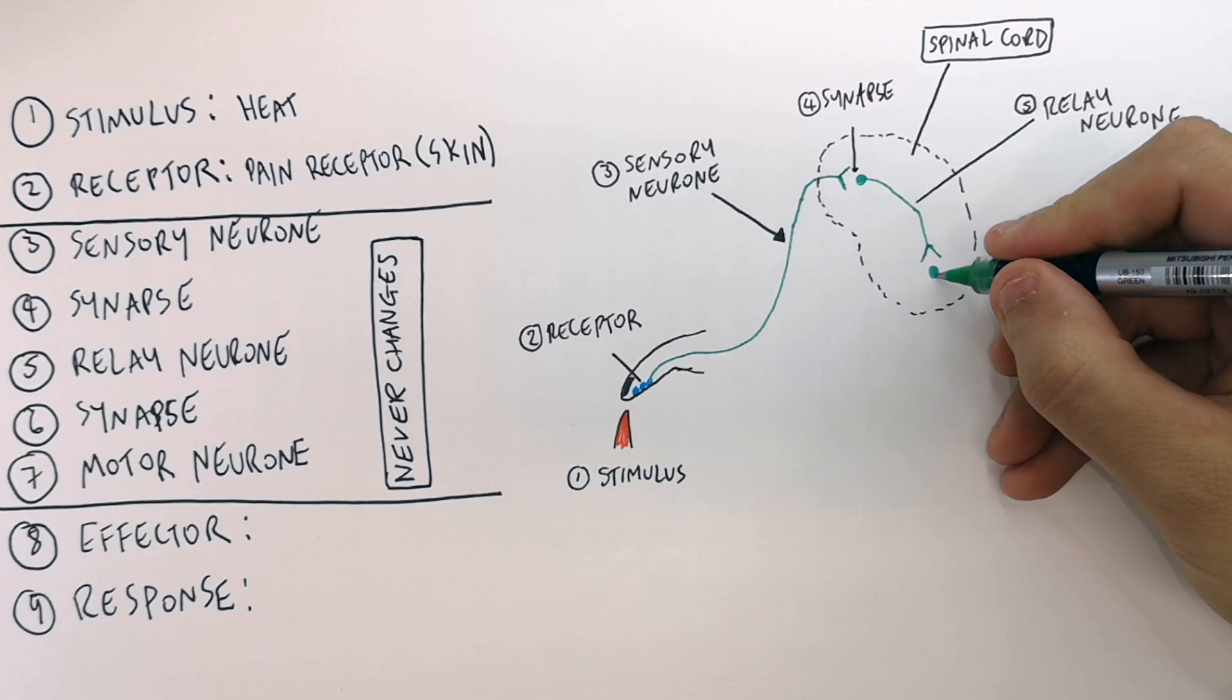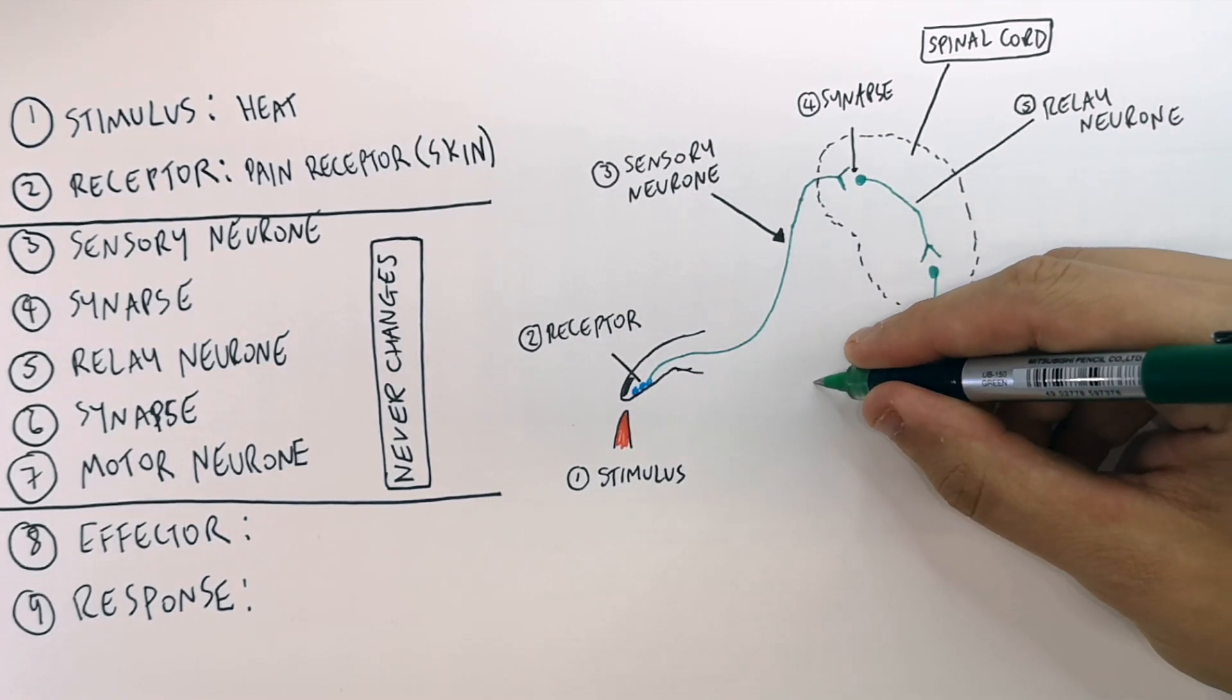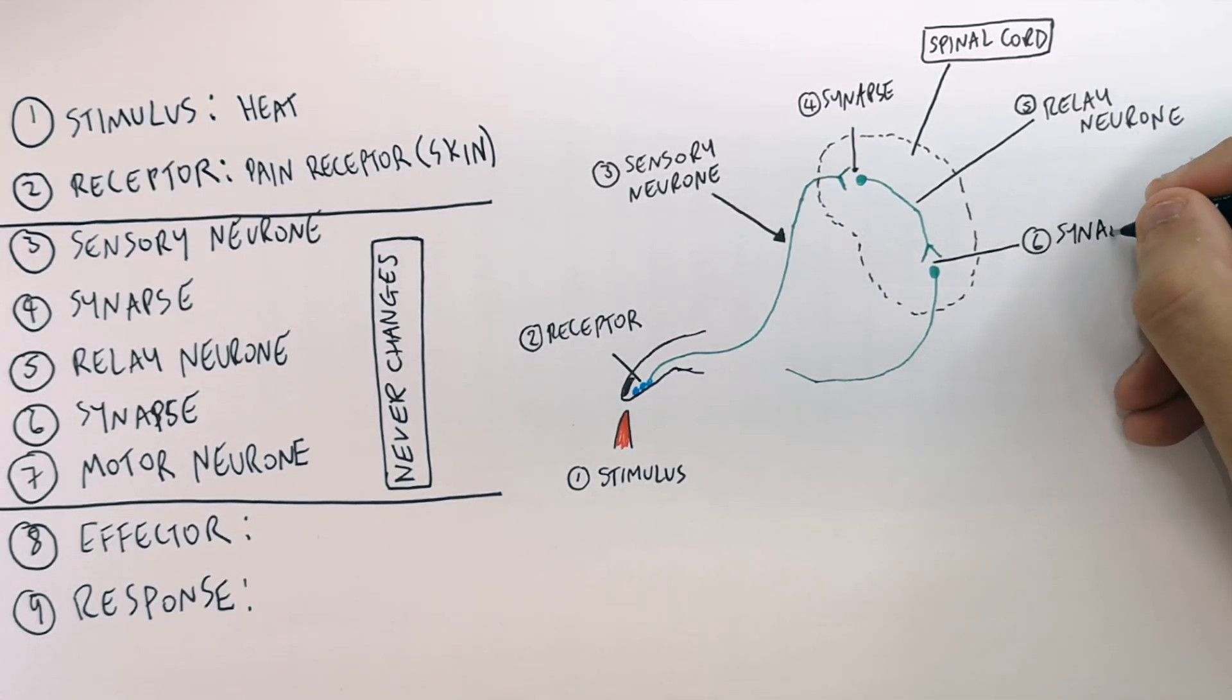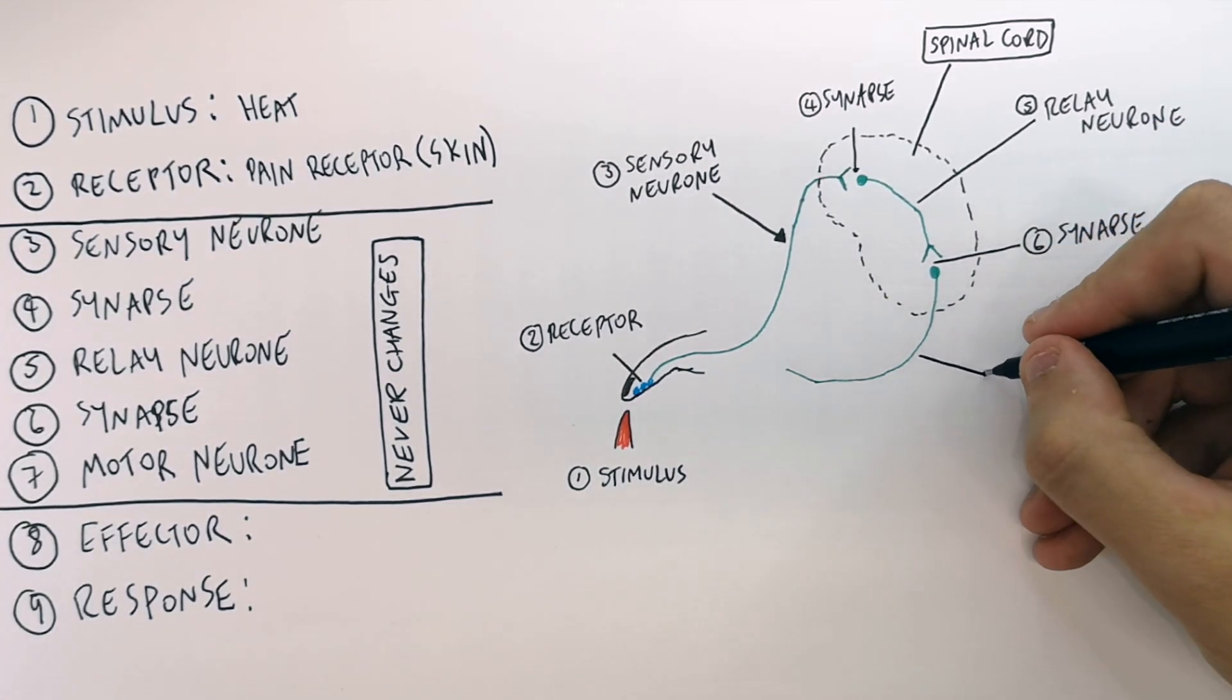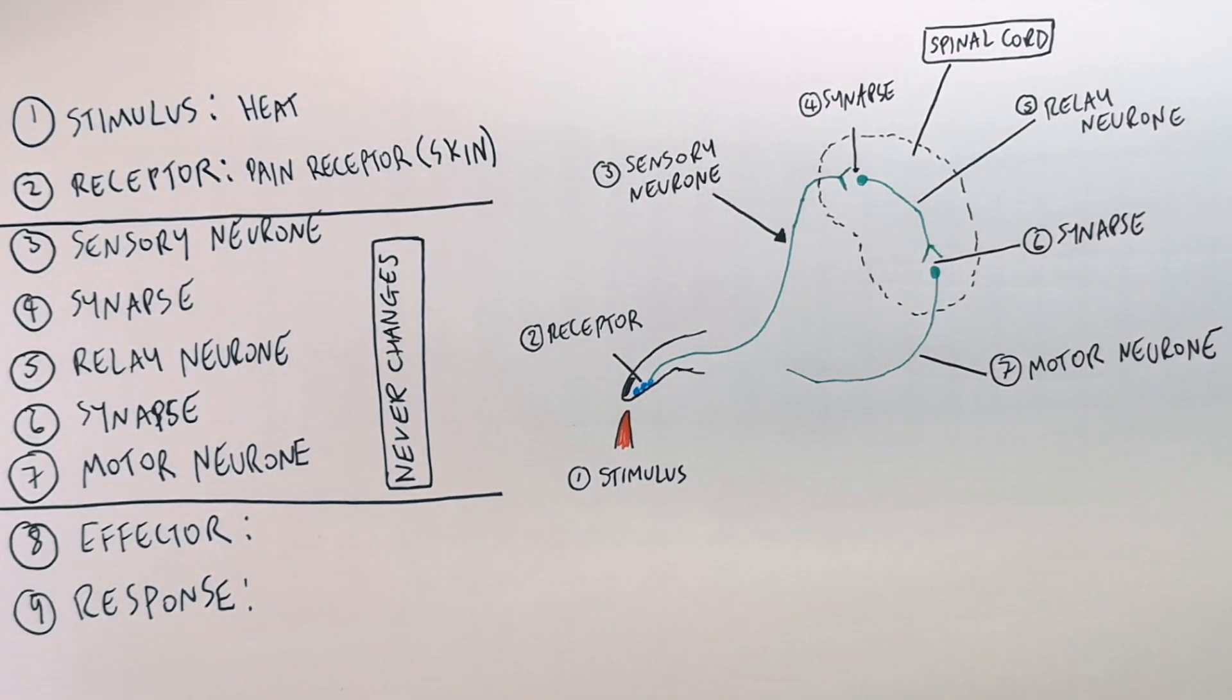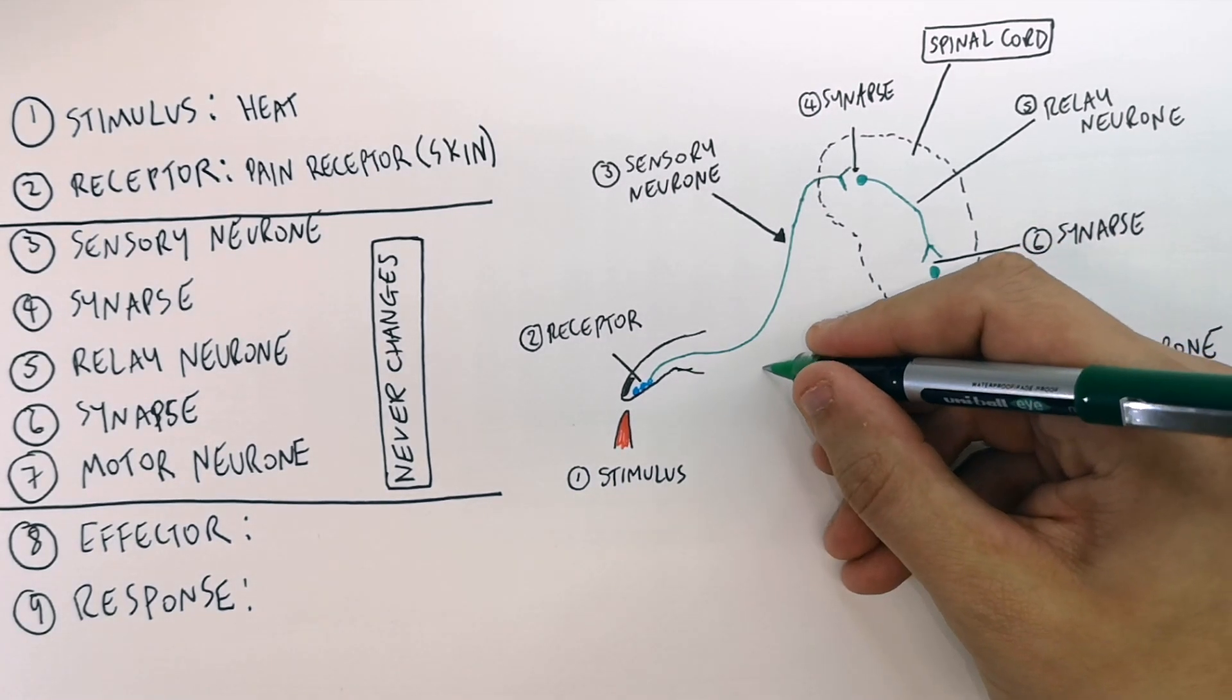An electrical impulse is now generated in the motor neuron. This is the motor neuron. And the signal crosses the synapse, which is connecting the relay neuron and the motor neuron. So this is now the motor neuron. The motor neuron is the neuron that connects the central nervous system to the effector.